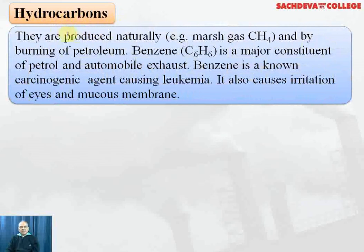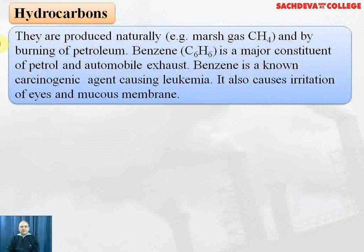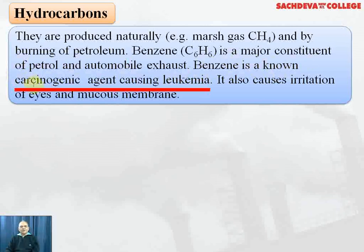Hydrocarbons are produced naturally, for example, marsh gas, which contains CH4. By burning of petroleum, benzene (C6H6) is the major component of petrol and automobile exhaust. Benzene is a known carcinogenic agent causing leukemia, that is blood cancer. It also causes irritation of eyes and mucous membrane.